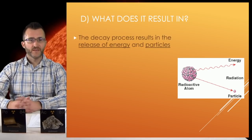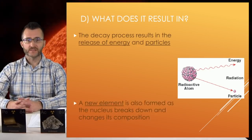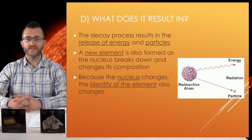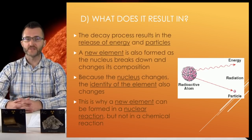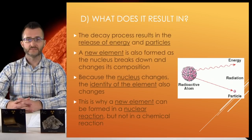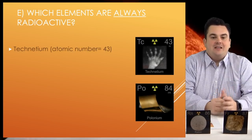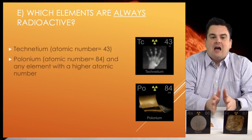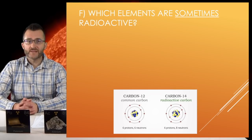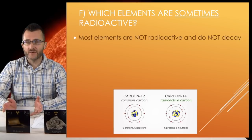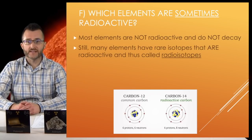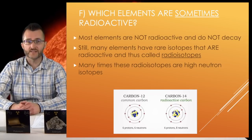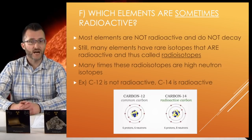What does it result in? The decay process results in the release of energy and particles. A new element is also formed as the nucleus breaks down and changes its composition. Because the nucleus changes, the identity of the element also changes — this is why a new element can be formed in a nuclear reaction, but not in a chemical reaction. Which elements are always radioactive? Technetium, atomic number 43; polonium, atomic number 84; and any element with a higher atomic number than polonium. Most elements are not radioactive and do not decay. Still, many elements have rare isotopes that are radioactive, called radioisotopes — often these are high neutron isotopes. For example, carbon-12 is not radioactive, but carbon-14 is.